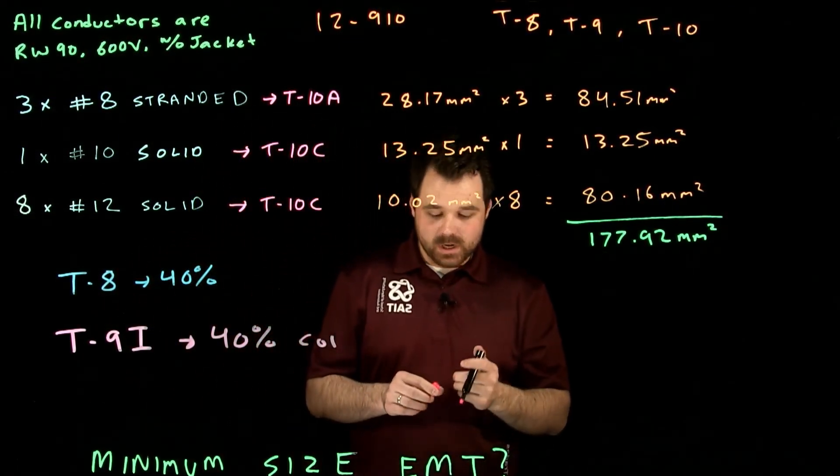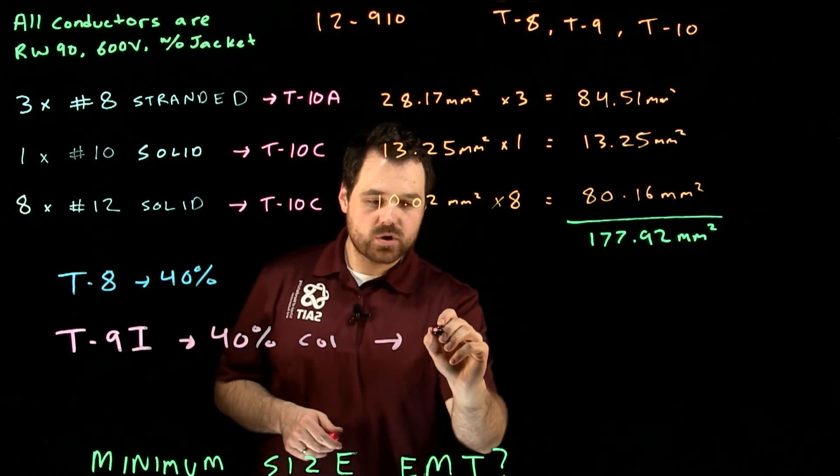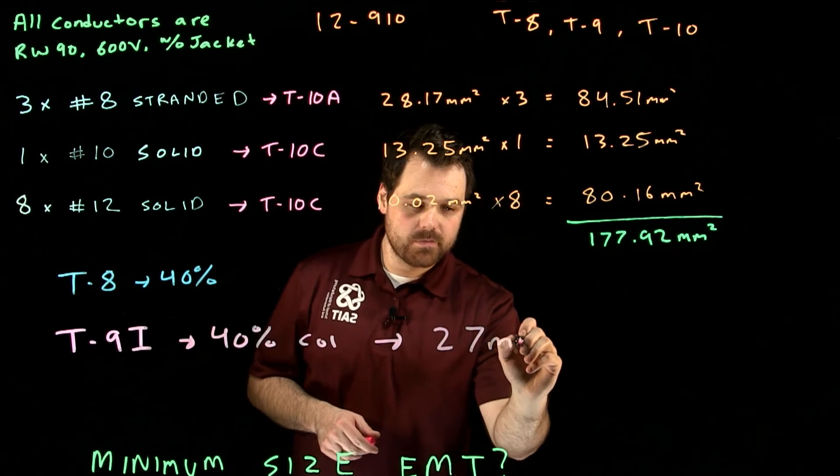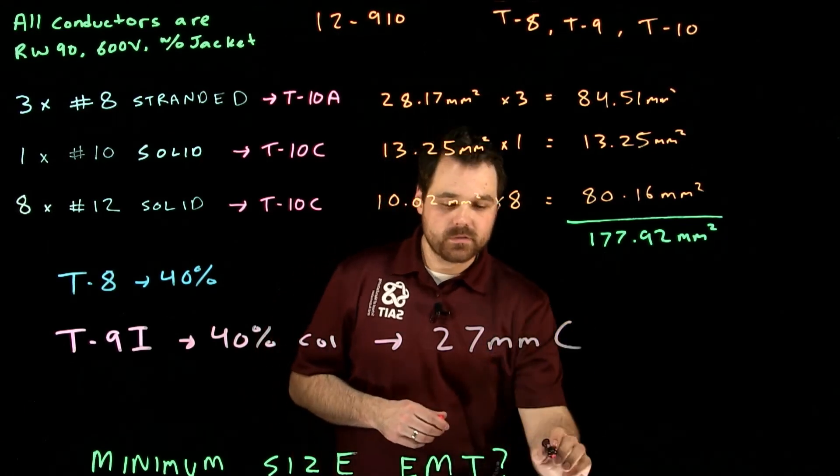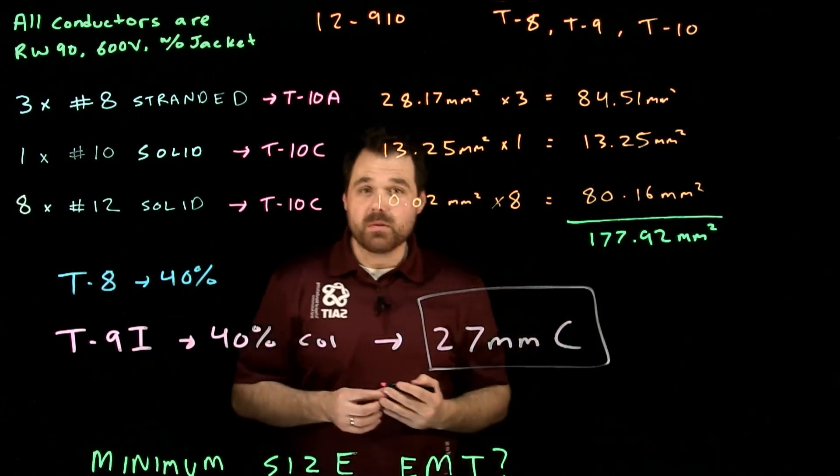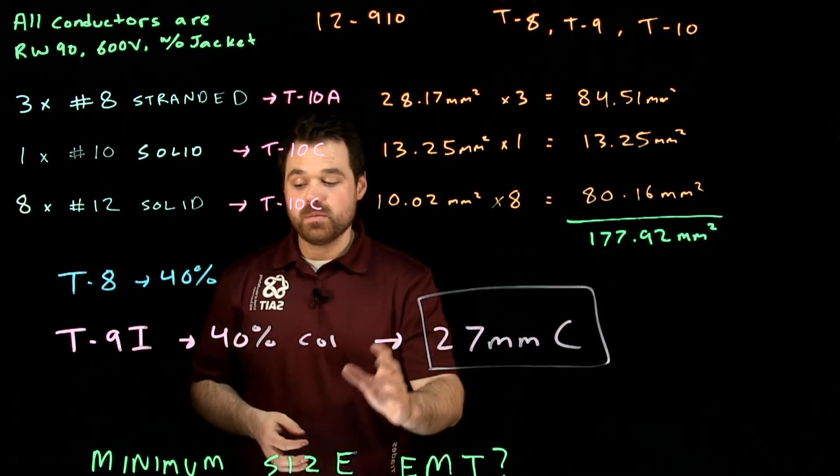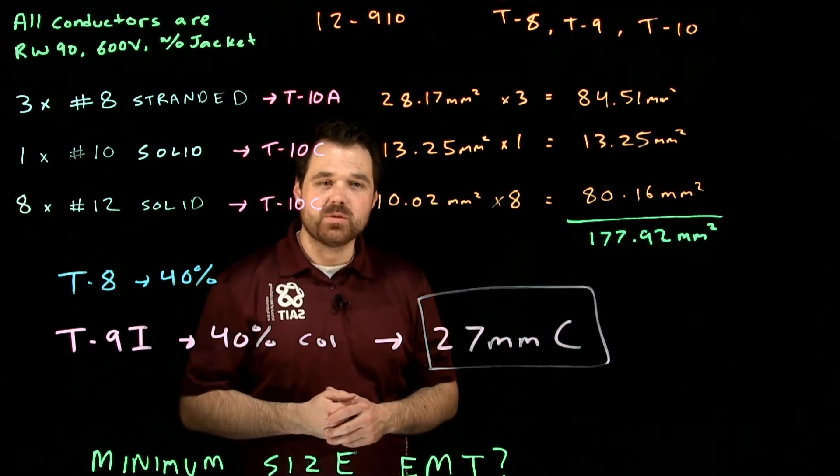And the 40% column tells us that we are going to need a 27 millimeter conduit. So a 27 millimeter conduit is the smallest conduit by code that we could use to pull in these conductors. And that conduit would be an EMT or electrical metallic tubing.